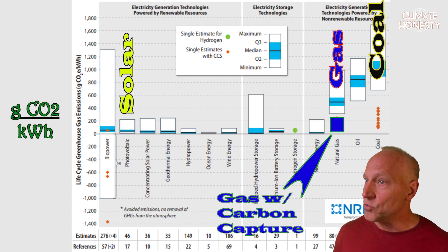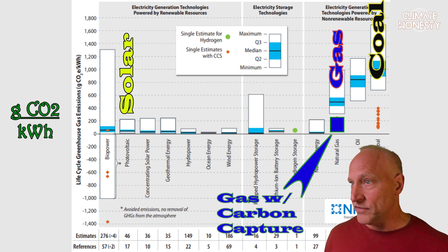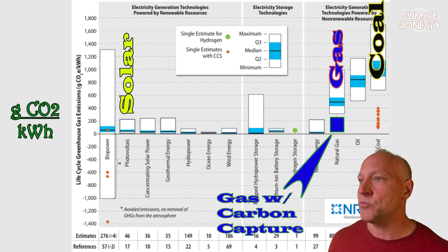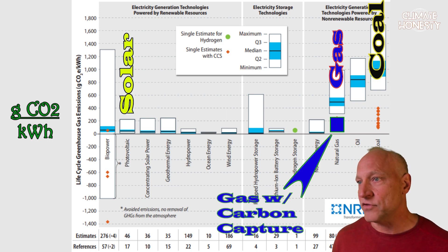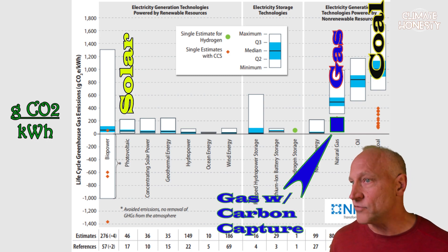So if I'm using coal to generate the electricity for this process, I'm going to end up with a lot more greenhouse gases than if I'm using some other forms such as hydro. Second, one of the big things we need to consider is that with solar and wind, the storage of electricity is a major component that we have to consider.